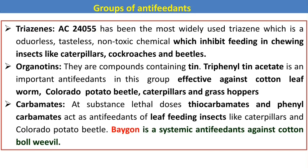There are several groups of antifeedants. The first is the triazine group, in which AC24055 is the most widely used. It inhibits feeding in chewing and biting insects such as caterpillars, cockchafers, and beetles. The next group is organotins, where triphenyltin acetate is important and effective against cotton leafworm, Colorado beetle, caterpillars, and grasshoppers. The carbamate group includes thiocarbamates and phenylcarbamates, which act as antifeedants for leaf-eating insects; vagone is a systemic antifeedant against the cotton boll weevil.